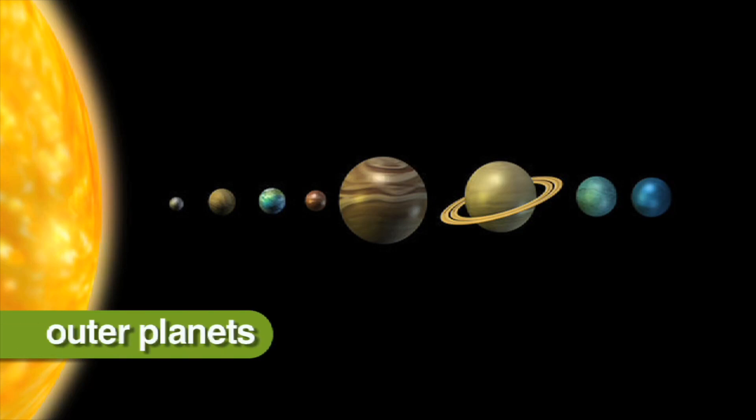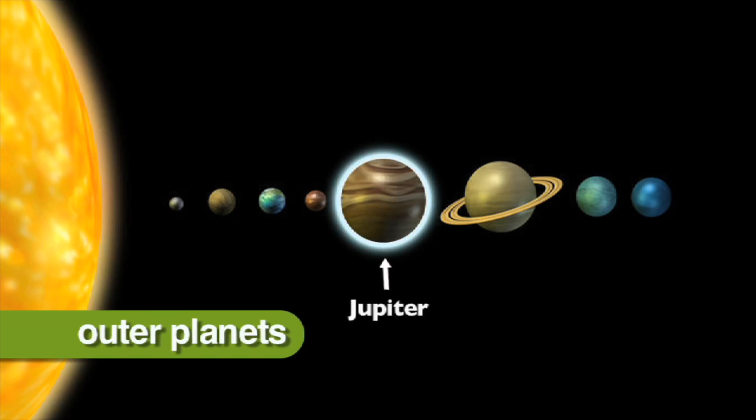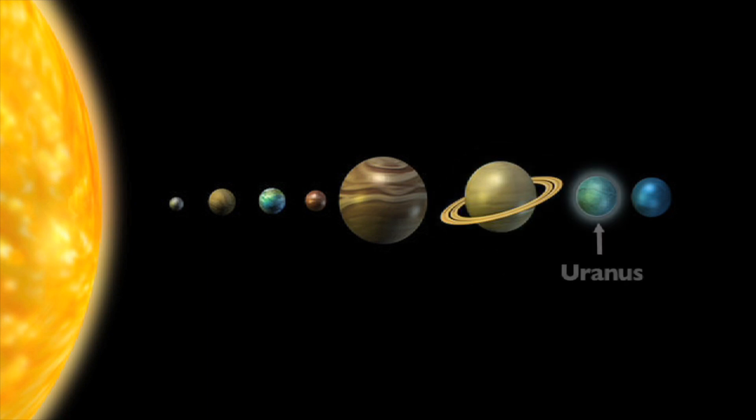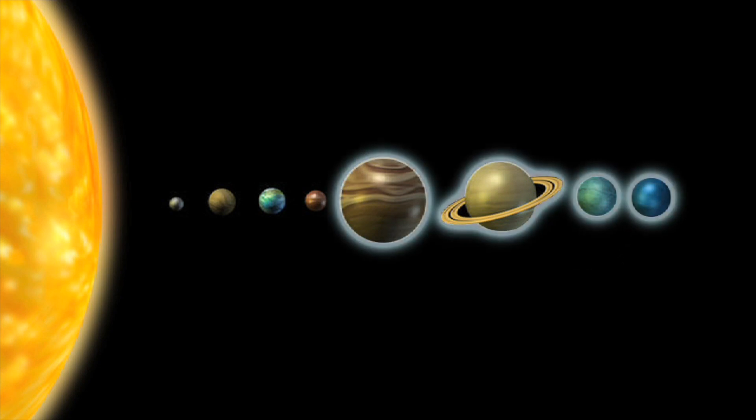The outer planets are Jupiter, Saturn, Uranus, and Neptune. They are much larger than the inner planets, and made mostly of hydrogen, helium, and other gases.